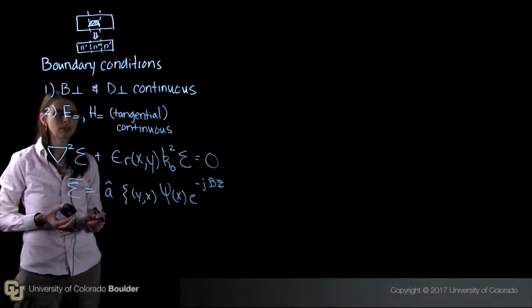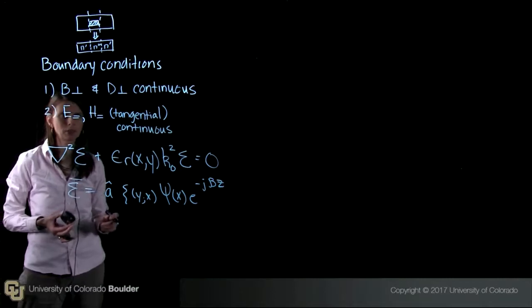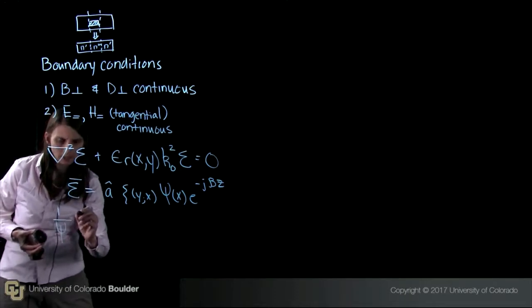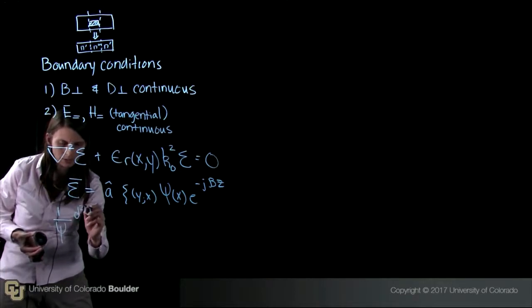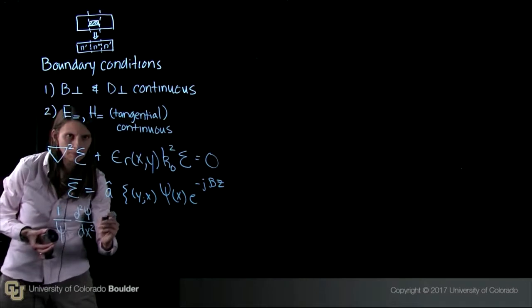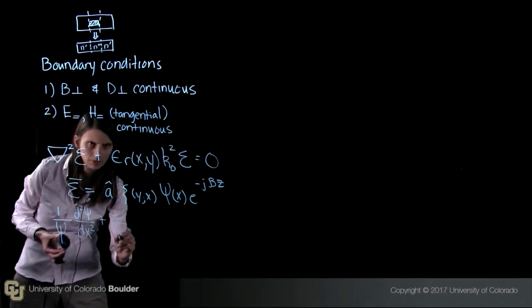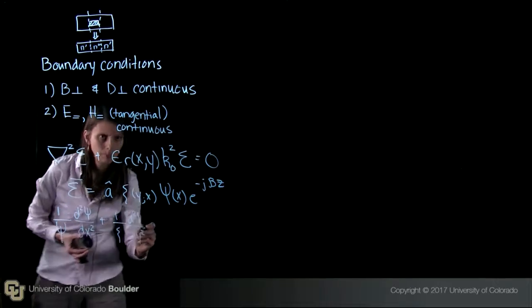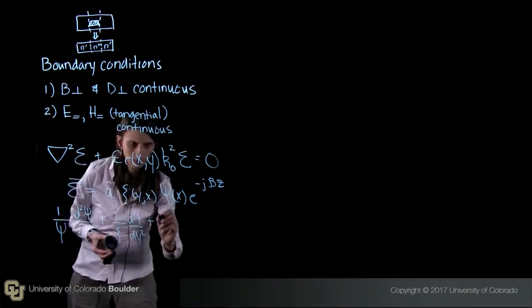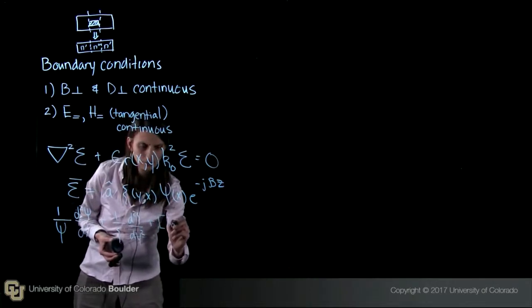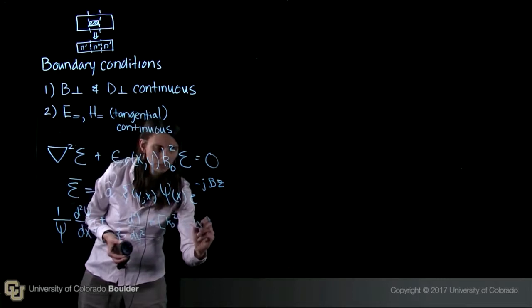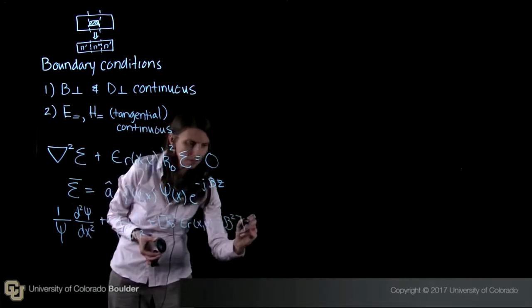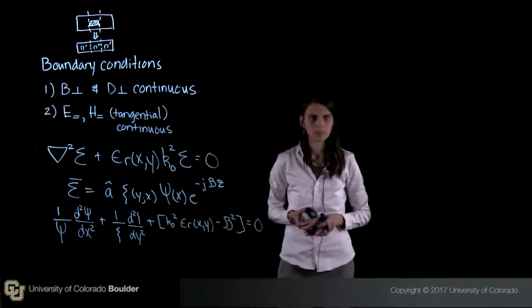So what we can do is we can substitute into the Helmholtz equation and we can separate into the lateral and the transverse parts. So let's go ahead and write this down. Now, this is 1 over psi and then here we have the second derivative of psi with respect to x plus, and then 1 over this variable and then the second derivative of this variable with respect to y, and then plus here we have k0 squared epsilon r of x comma y minus beta squared equals 0.